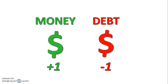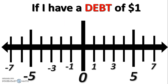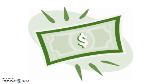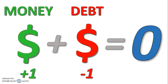Think about in the real world when we see positive and negative values — for example, having money or having debt. If you have a debt of one dollar, you don't have any money; you actually have less than no money — negative one dollar. If you find a dollar, you don't get to keep it; you have to use it to pay off your debt. So a debt of one dollar and one dollar combine to make zero.